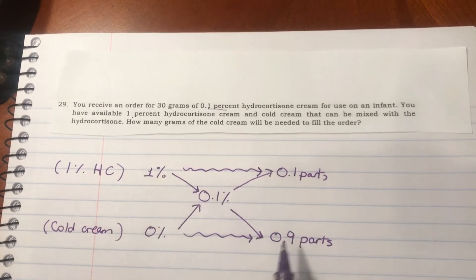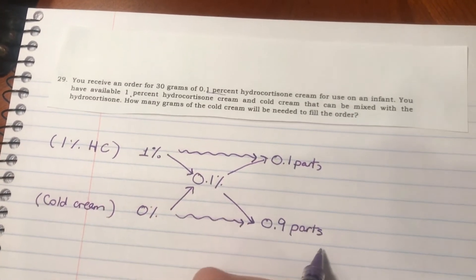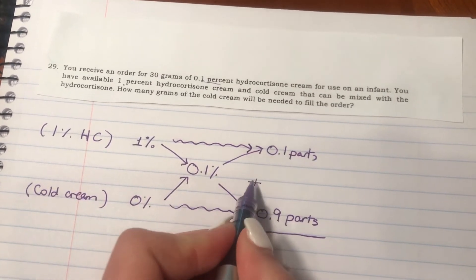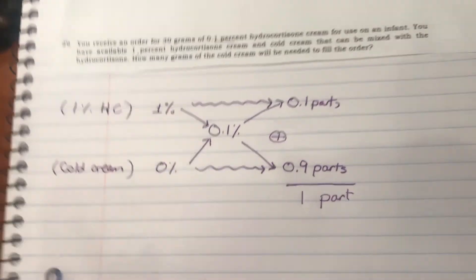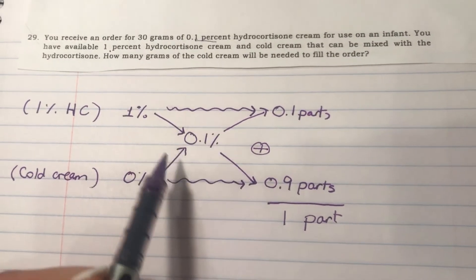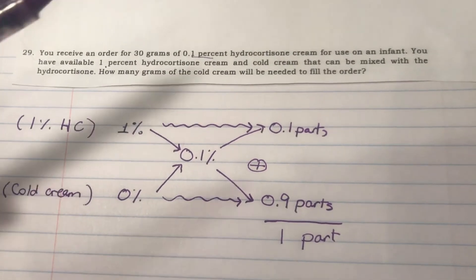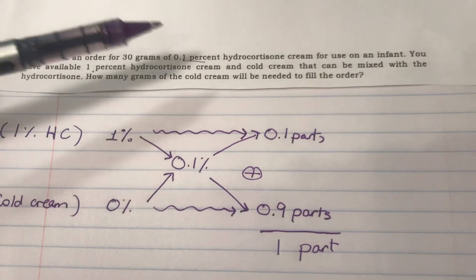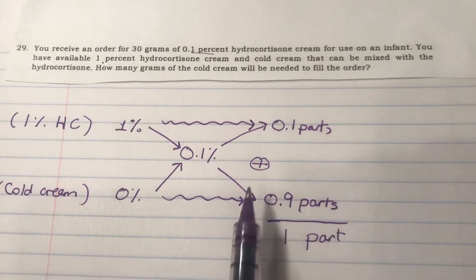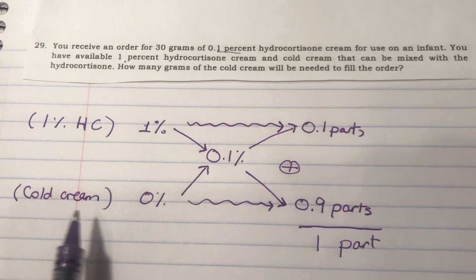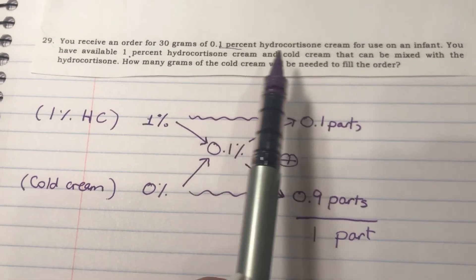So 0.1 parts of the 1% hydrocortisone and 0.9 parts of the 0% cold cream. The next step is to add these parts: 0.1 plus 0.9 equals one part. One part represents the 0.1% hydrocortisone cream that you want to prepare. This means that to prepare the required 0.1% hydrocortisone, you need to add 0.1 parts of the 1% hydrocortisone to 0.9 parts of the 0% cold cream, and you'll get one part of the 0.1% hydrocortisone that the order requires.